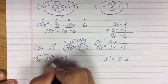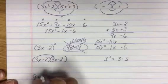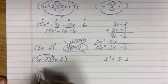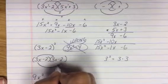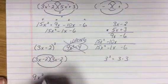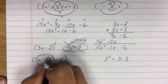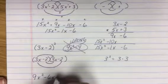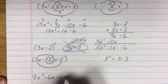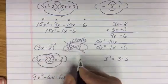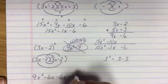This is the same as this, which means we will FOIL it. So 3x times 3x gives me 9x². Outer: 3x times negative 2 gives me negative 6x. Inner: negative 2 times 3x gives me negative 6x. Last: negative 2 times negative 2 gives me positive 4.